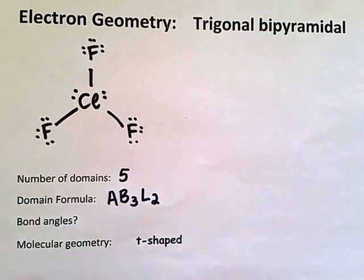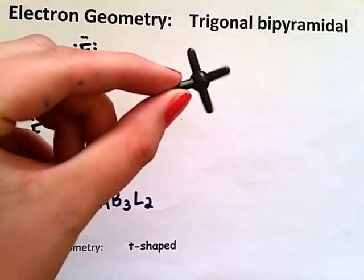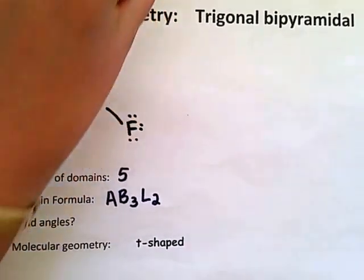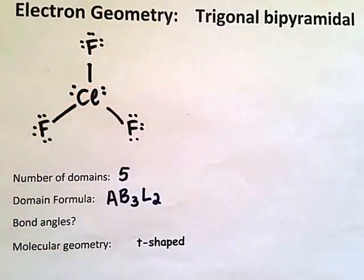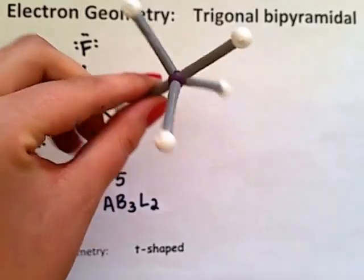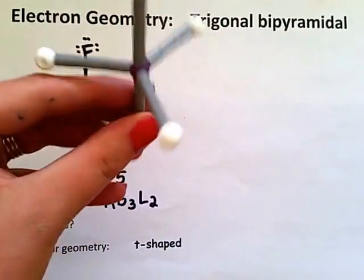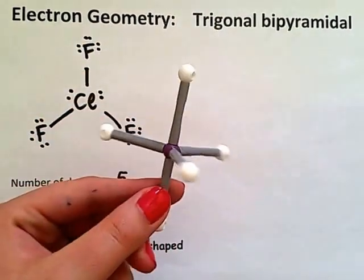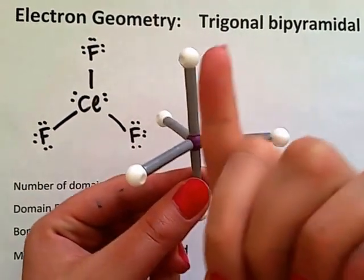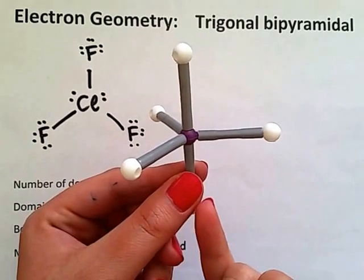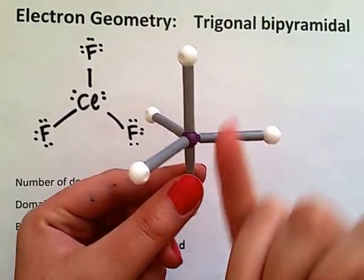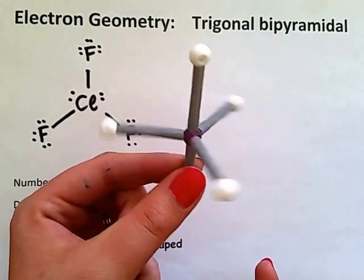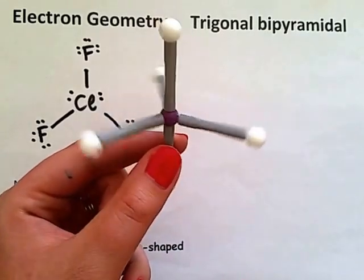This means that we must again select a central atom with five arms. Build your molecule again with a trigonal bipyramidal arrangement, holding it in such a way that you have straight axial domains and twirling equatorial domains.